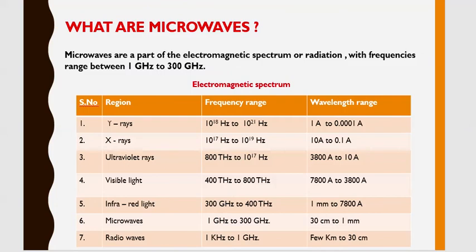The common electromagnetic spectrum may be divided into various categories of frequencies. We have divided these various frequencies of the electromagnetic spectrum in a table, starting from gamma rays, X-rays, ultraviolet rays, visible light, infrared light, microwaves, and radio waves. The frequency range and wavelength of these various categories are shown in this table.